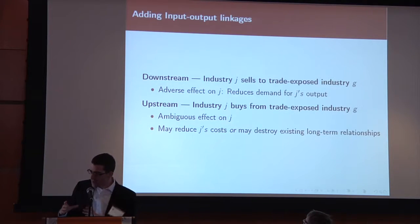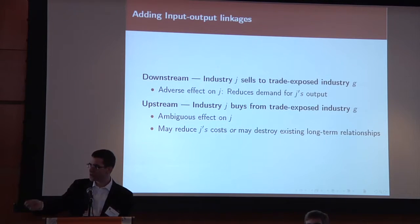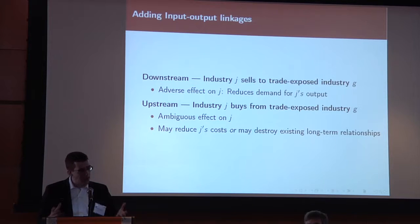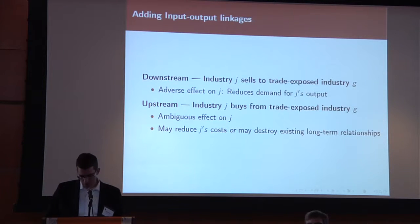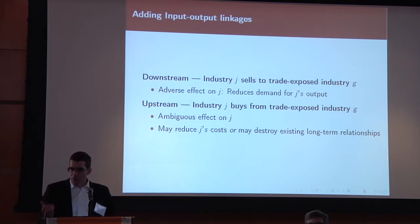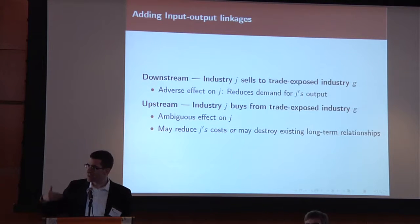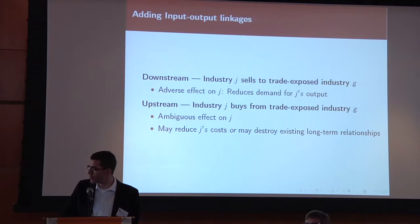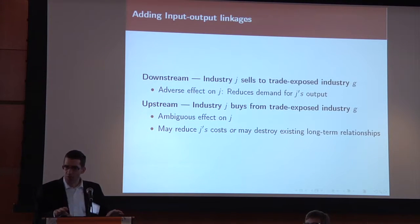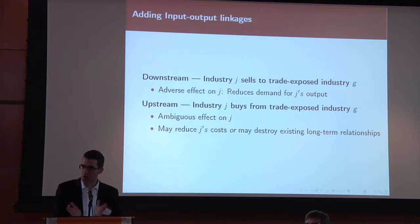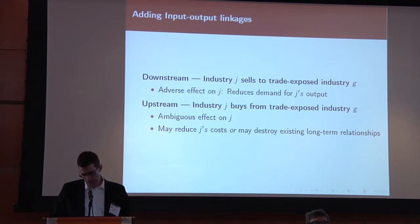Now we move to the second exercise, which takes into account that industries within the United States also trade with each other and supply chains are affected by these goods imports. The impact comes in two types. First, we have a downstream effect: industry J sells to customer industry G, and that customer industry G is affected by trade competition. If that customer industry is contracting, we would expect that the firm selling to it might also be suffering.